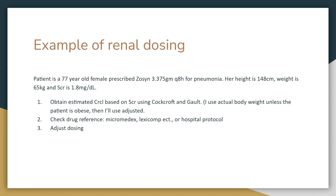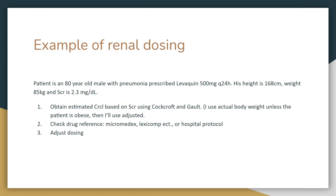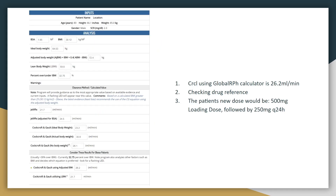We go back and check our drug reference. For the Levaquin, if they were dosed at 500 milligrams, they'll be in that second category — it's actually bolded on this one — 500 milligram loading dose, and then 24 hours later we'll do 250 milligrams Q24 hours. So the patient's new dose will end up being a 500 milligram loading dose, followed by 250 milligrams Q24 hours.